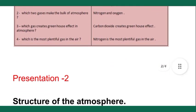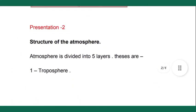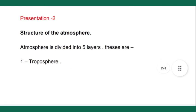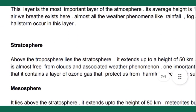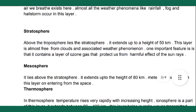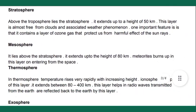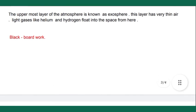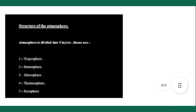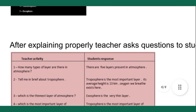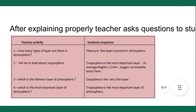In Presentation Two, we have to explain the layers of the atmosphere — troposphere, stratosphere, mesosphere, thermosphere, and exosphere — everything must be presented and explained very clearly to students. For the blackboard work, we have to write the list of all the layers of the atmosphere. After explaining, we again ask questions to students.